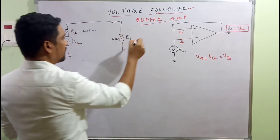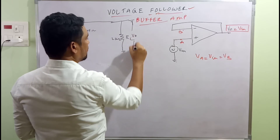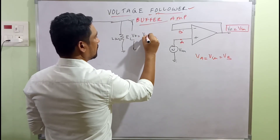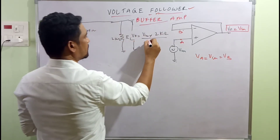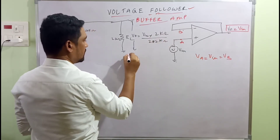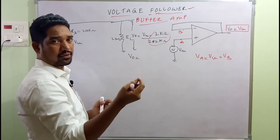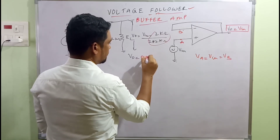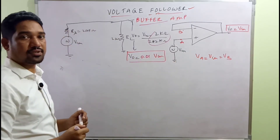The output V-naught is collected across RL. According to the potential divider rule, V-naught equals V-in multiplied by 2kΩ divided by the total resistance of 202kΩ. This gives V-naught approximately equal to 0.01 times V-in — a severe attenuation, which is a disadvantage in some applications.